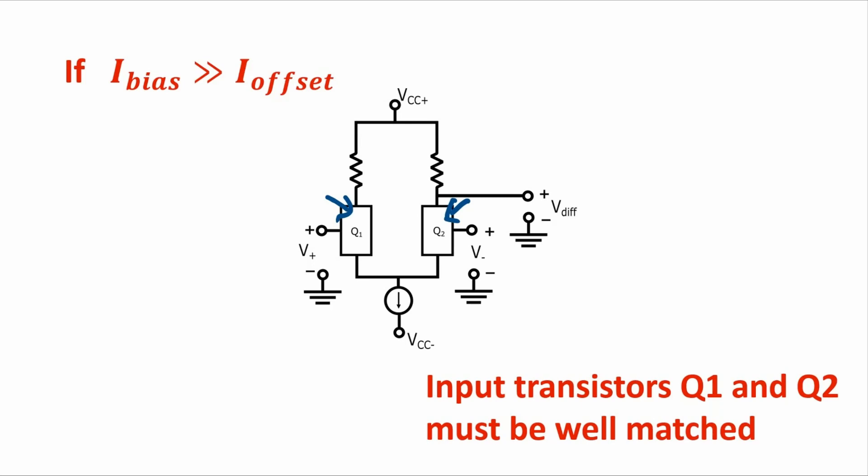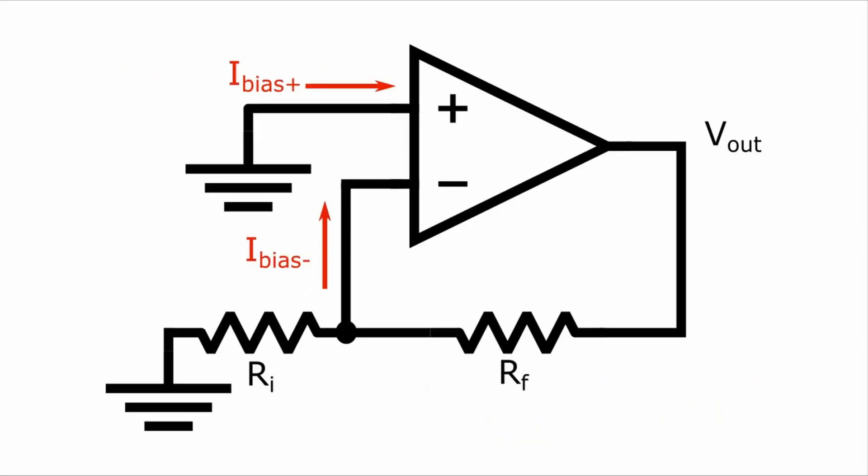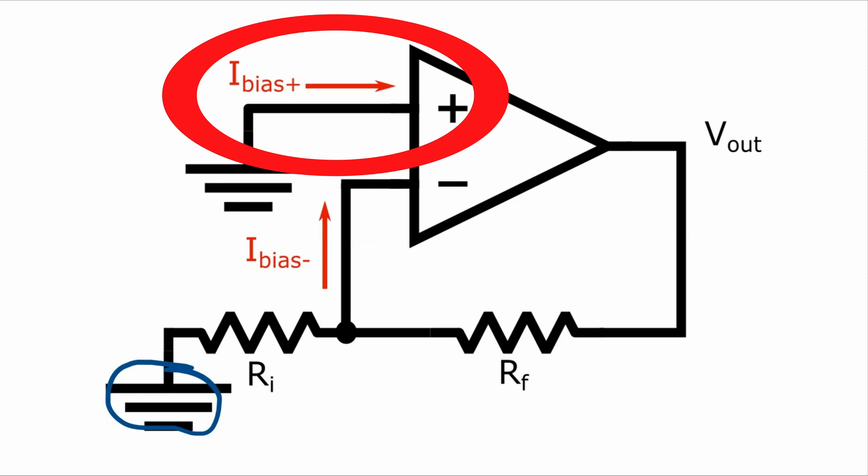So what effect does the input bias current have on a circuit? Well, let's take a look at this circuit, which is an inverting amplifier configuration, but with the input grounded to better see the effect of input bias current. There is current into the non-inverting terminal, but it has no real effect on the output voltage since it doesn't pass through any external resistors to create any kind of voltage drop.